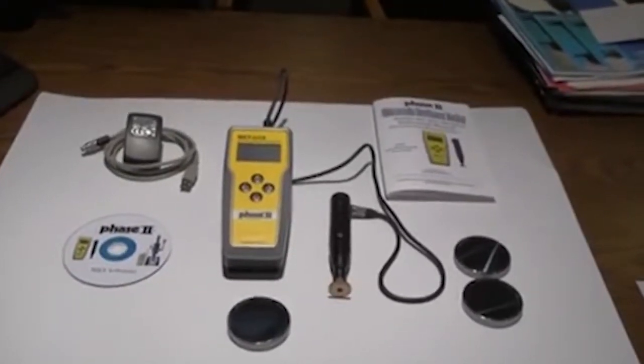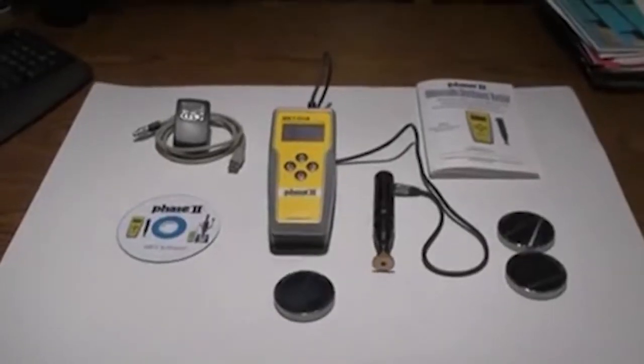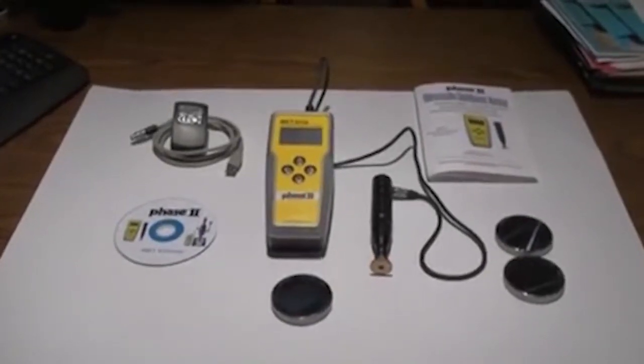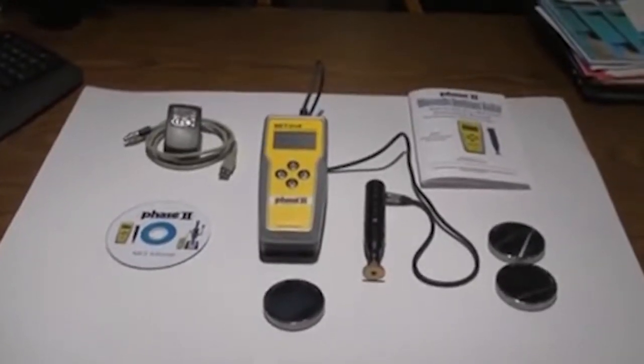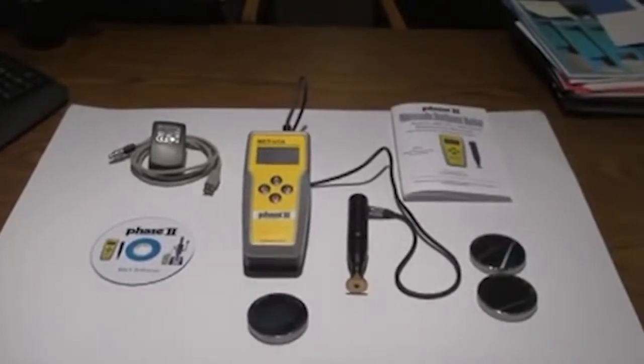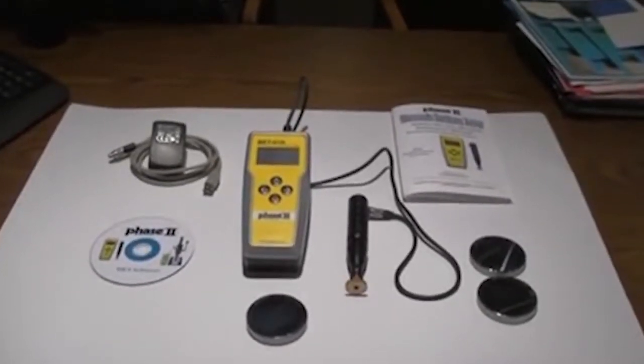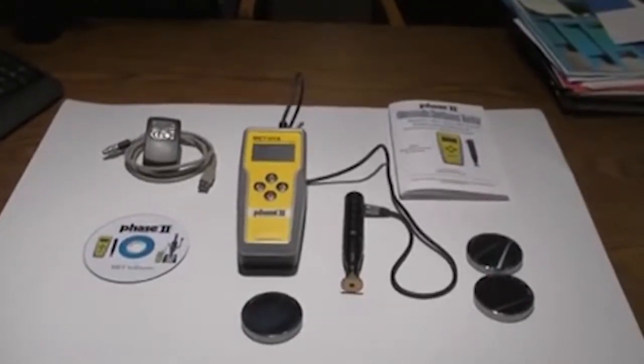It can do so non-destructively unlike most other portable hardness testers. The technology incorporated is based on the UCI method of hardness testing. UCI, or ultrasonic contact impedance, is the measurement of the frequency shift of a resonating rod tipped with a Vickers diamond after applying a fixed force against the surface of the part to be tested.